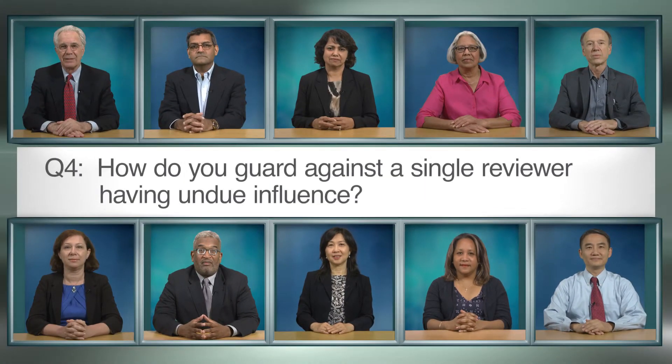Number 4: How do you guard against a single reviewer having undue influence at the review? Before the review meeting, the Scientific Review Officer, or SRO, looks for instances where one reviewer's scores or critiques are out of sync with the others. The SRO will notify the chair and assigned reviewers when this happens. If the differences are not resolved before the meeting, the chair will make sure the study section discusses them to see if they are well-founded or not. Also, if a review discussion is one-sided, chairs are trained to ask questions and encourage other reviewers to join the discussion. It is important to note that reviewers take their jobs seriously and they routinely question each other when they feel a review is not balanced.